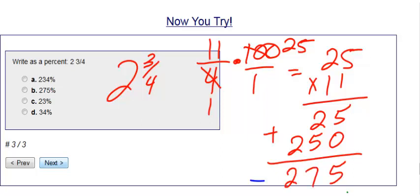And then on the bottom we just had 1 times 1 is 1. Therefore, our final answer is going to be 275%.